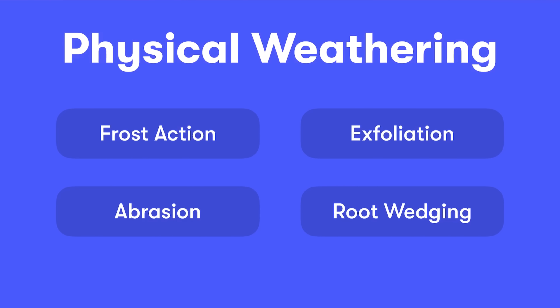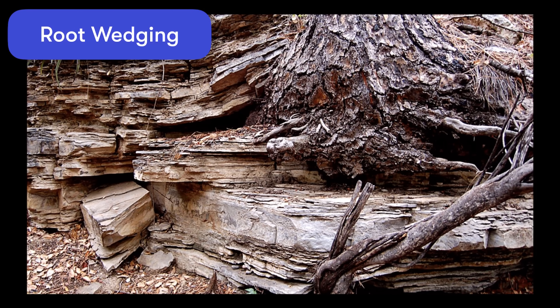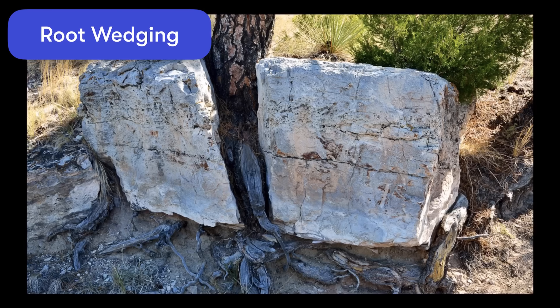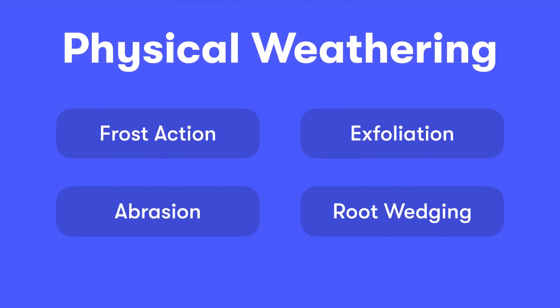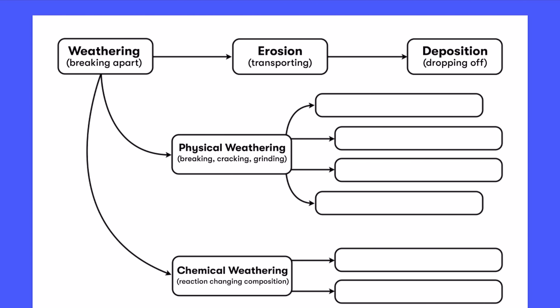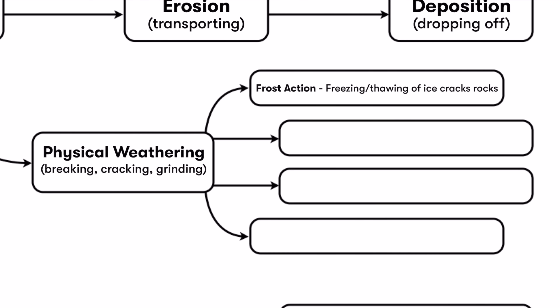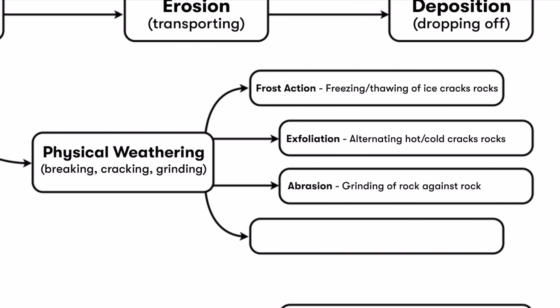The last type of physical or mechanical weathering is root wedging — pretty self-explanatory. This is when plant roots grow within the cracks of rock, and as the plants grow larger, they break apart the rock. It's amazing how powerful tree roots and plant roots can actually be — so much so that they physically break apart rocks as the plants grow. On our flowchart, under physical weathering we add: frost action (freezing and thawing of ice cracks rocks), exfoliation (alternating hot and cold cracks rocks), abrasion (grinding of rock against rock or sand against rock), and root wedging (plant roots growing into rocks).